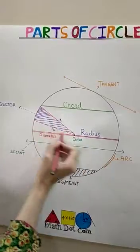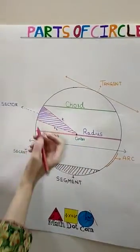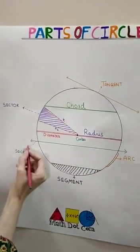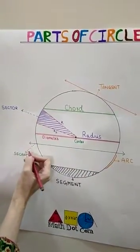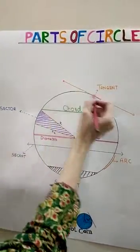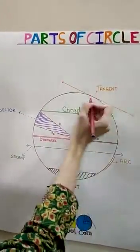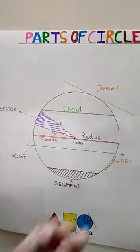This is the sector of the circle. This is the secant line — the secant of the circle — and this line is the tangent of the circle, touching the circle.